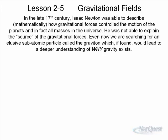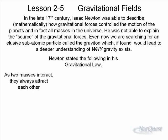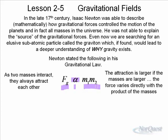Newton stated that gravitational law: as two masses interact, they always attract each other. The force of gravity is proportional to the product of the two masses. If the two masses are very big, the gravitational force between them is going to be much larger. If two masses are very small, the gravitational force will be much smaller. The attraction is larger if the masses are larger — the force varies directly with the product of the masses.